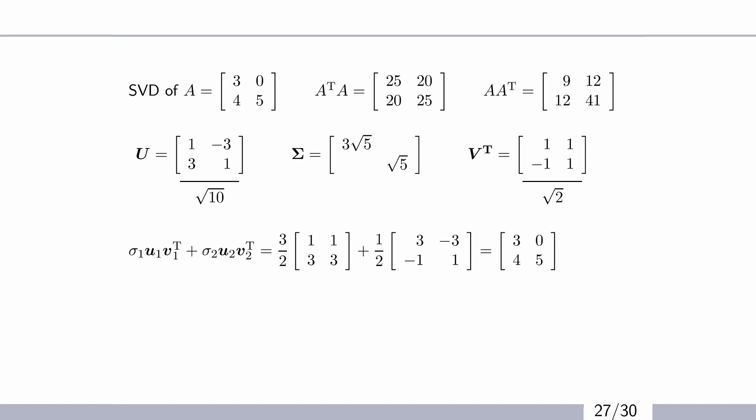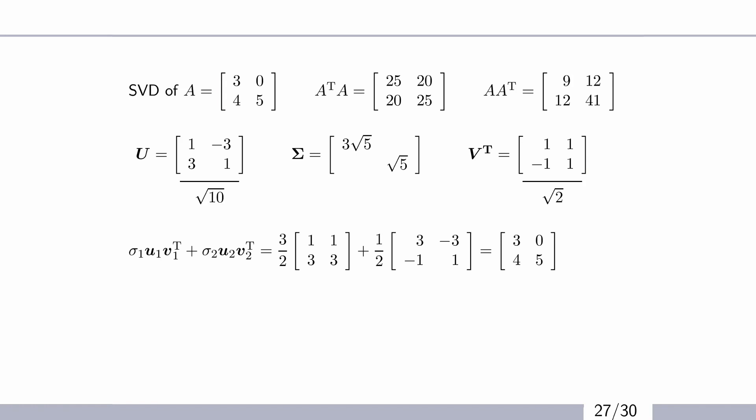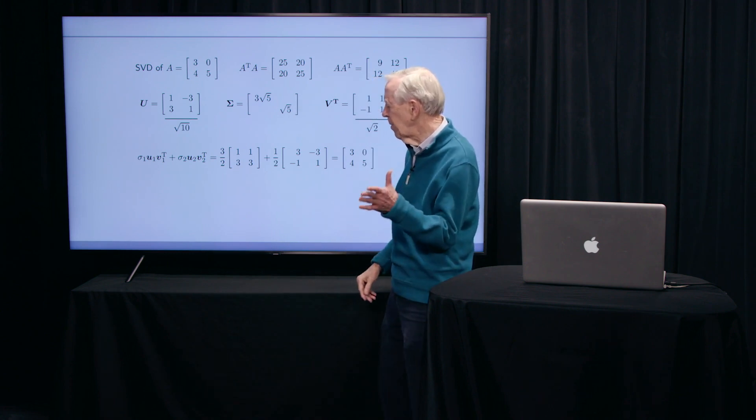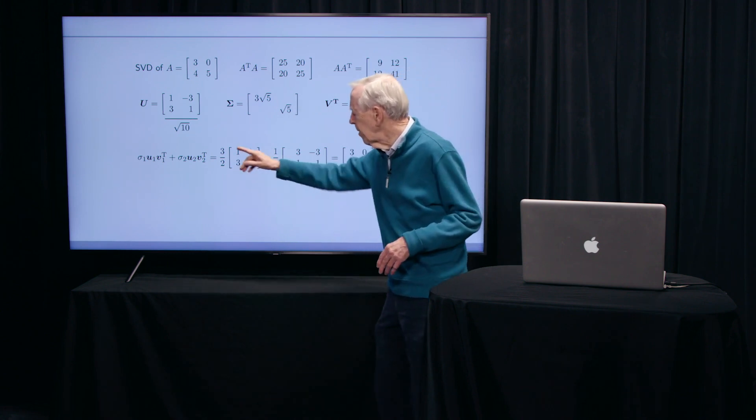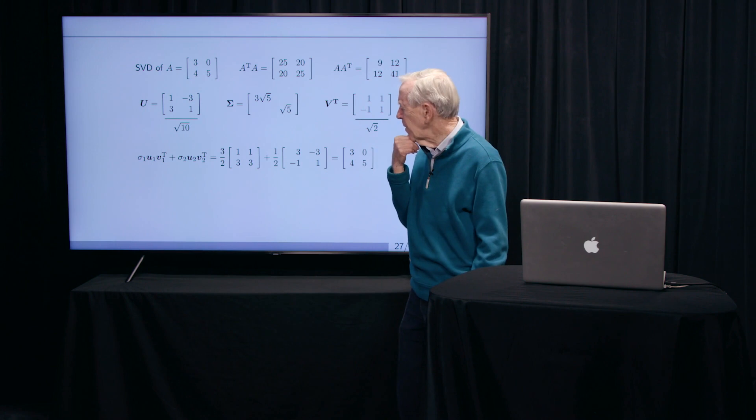So it's really broken my matrix into a couple of pieces, one for the first singular value and vector, and the other for the second singular value and vector.